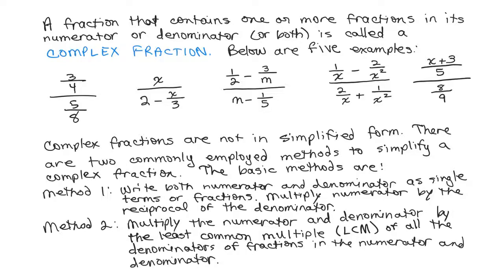The first method is to write both the numerator and denominator as single terms or fractions, and then multiply the numerator by the reciprocal of the denominator. The only example where you already have the numerator and denominator as a single fraction is the very first one: three-fourths in the numerator and five-eighths in the denominator. All of the rest are not in that form.